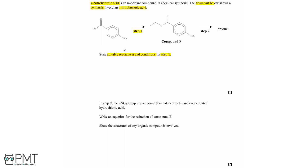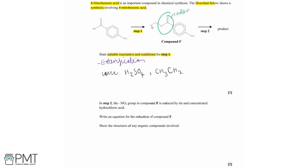Looking at the differences between 4-nitrobenzoic acid and compound F, compound F contains an ester group, so step 1 is an esterification reaction. This requires concentrated sulfuric acid, acting as both catalyst and dehydrating agent, and an alcohol. The ester section shows two carbons, so we need ethanol, CH3CH2OH. Both the sulfuric acid and ethanol must be listed to gain the mark for this part.